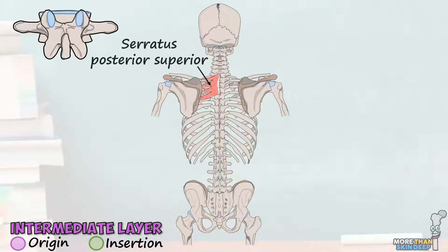The first of these muscles is the serratus posterior superior. This muscle gets its name from the Latin origin 'sero,' which means cut or saw — think serrated. It consists of a flat origin from the nuchal ligament and the spinous processes of C7 to T3, before splitting into four serrations which insert into the second to fifth ribs.